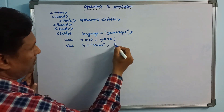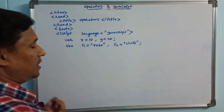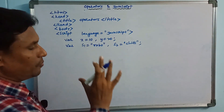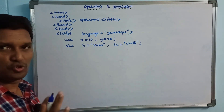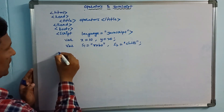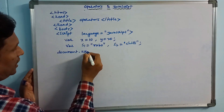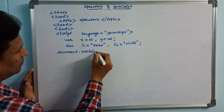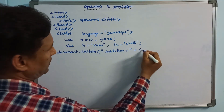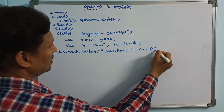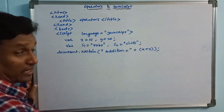S1 is equal to a string value in double quotes. S2 is also assigned. In a single program, we will cover arithmetic operators, relational operators, and string operators. Using document.write, we print the addition result: addition equals x plus y, which is 10 plus 20 equals 30.